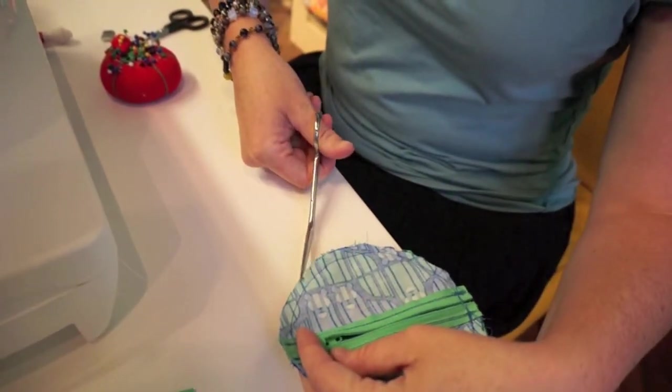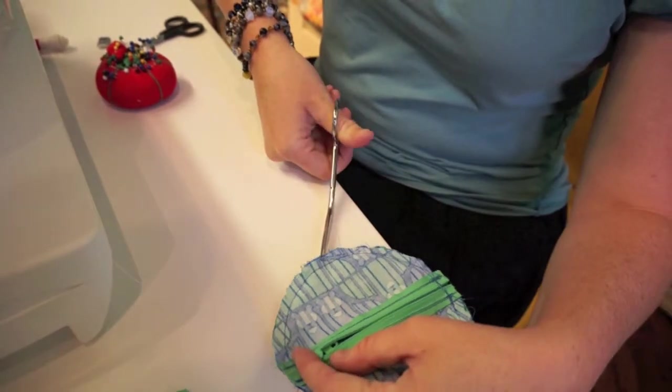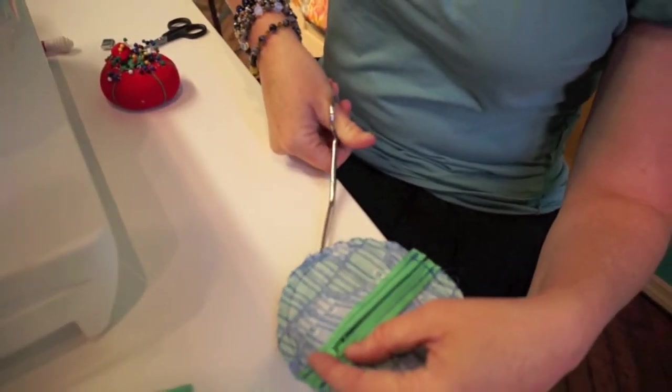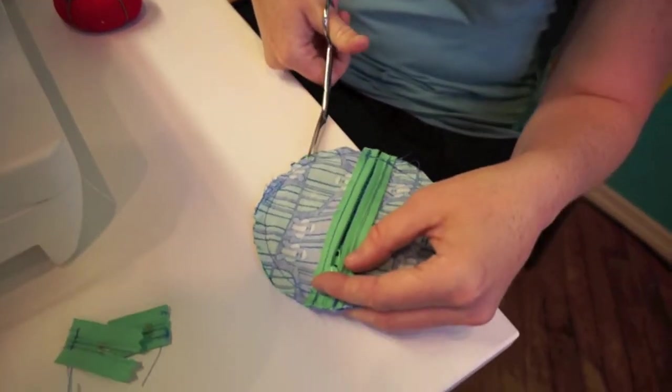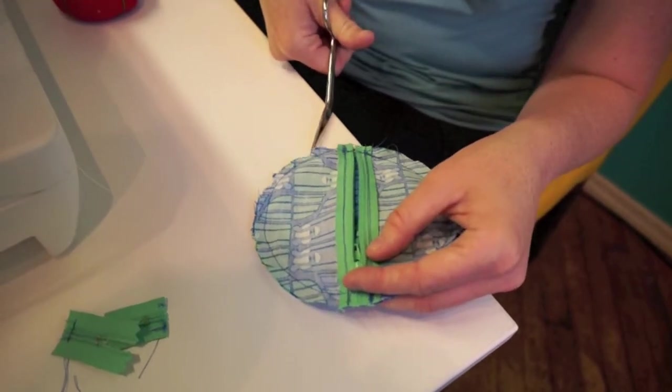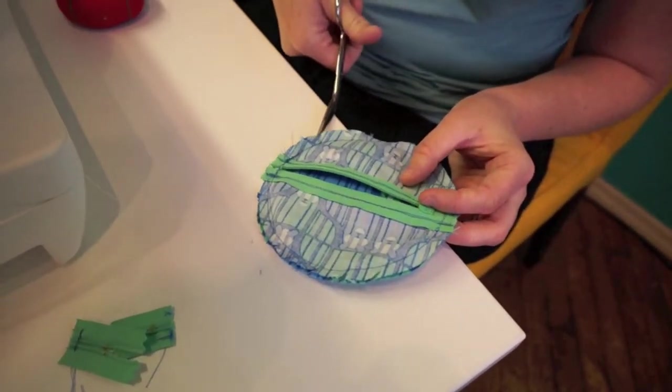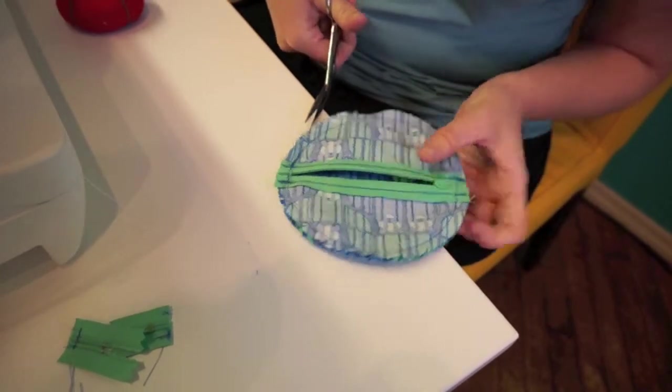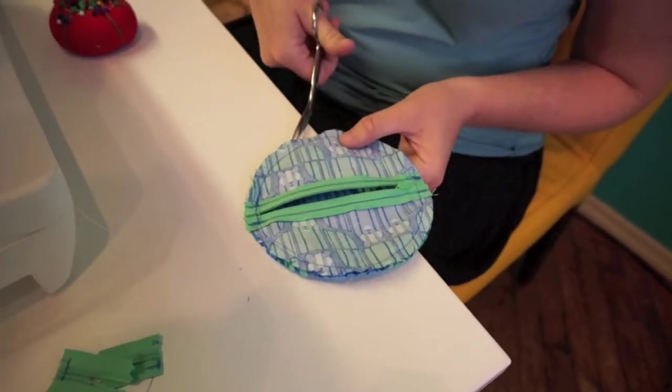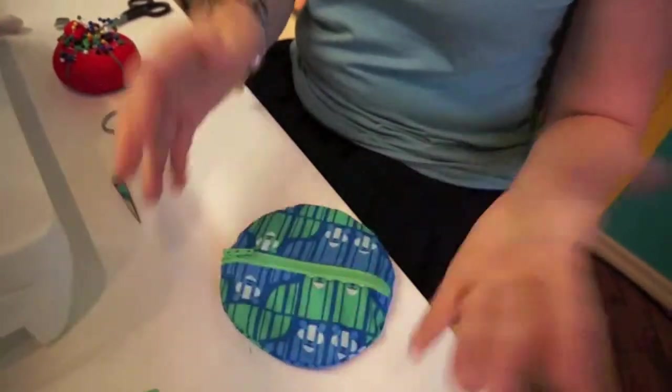Just cut some little diagonals in it and it'll just give it some more room to move. Piece of cake. Everybody can cut. Just be careful that you don't cut over the seam that you've done because then you'll have to do more work and then you'll get annoyed with yourself and no one wants that.